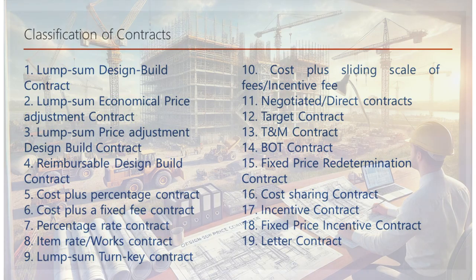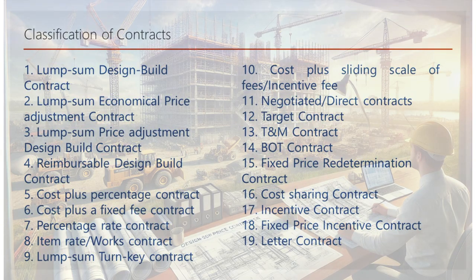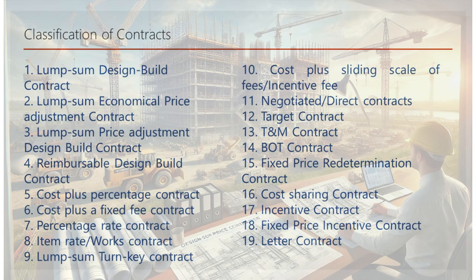5. Cost-plus percentage contract: the contractor is paid for actual costs plus a percentage of those costs as a fee. 6. Cost-plus a fixed fee contract: the contractor is paid for actual costs plus a pre-agreed fixed fee. 7. Percentage rate contract: payment is based on a percentage of the total project cost. 8. Item rate works contract: the contractor is paid based on predetermined rates for specific work items. 9. Lump-sum turnkey contract: the contractor is responsible for both design and construction, delivering the project ready for operation at a fixed price. 10. Cost-plus sliding scale of fees incentive fee: provides an incentive fee that varies based on the contractor's performance.